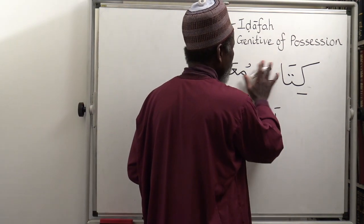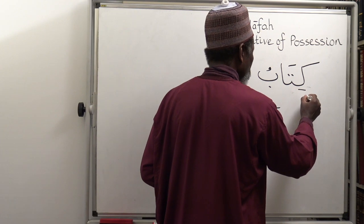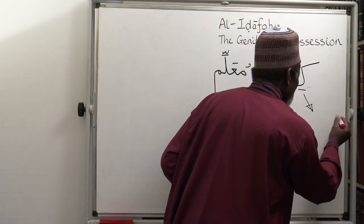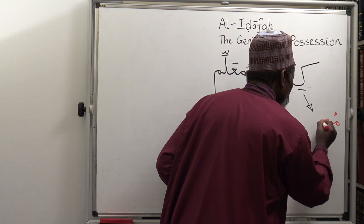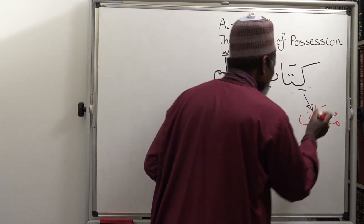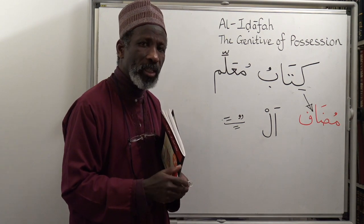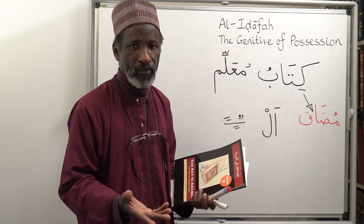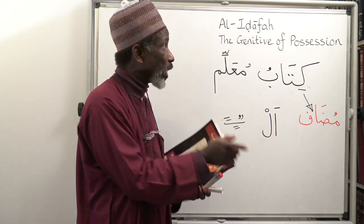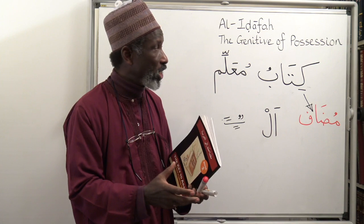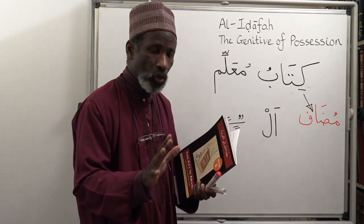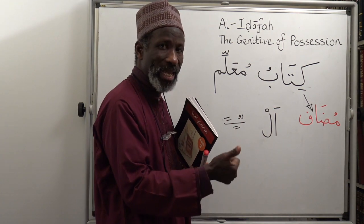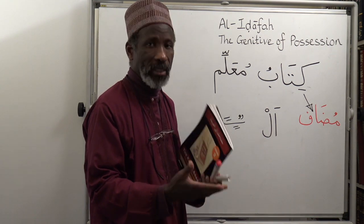Mudaf — I'm going to write that name in Arabic for you. Mudaf, meaning a noun which is being attributed to something else, to something or to somebody. Mudaf — that's the first part of what we call the idhafa construction, the genitive of possession. The rules governing it: no 'al,' no nunation. It may have 'u' as a default, or 'e' if necessary, or 'a' if necessary.